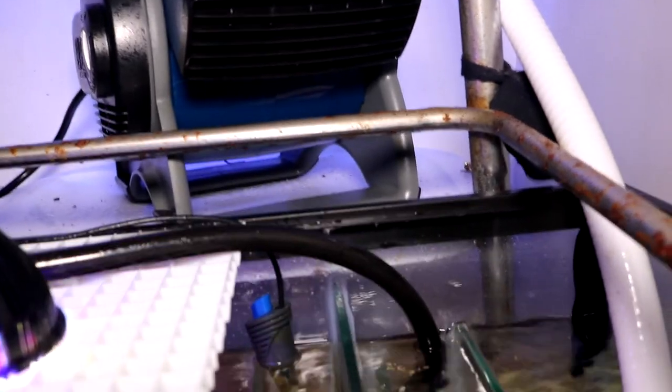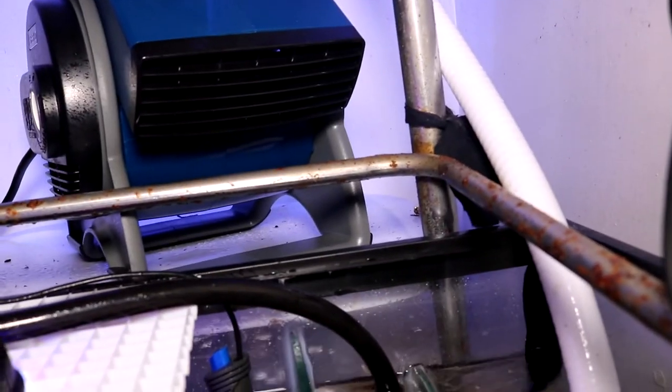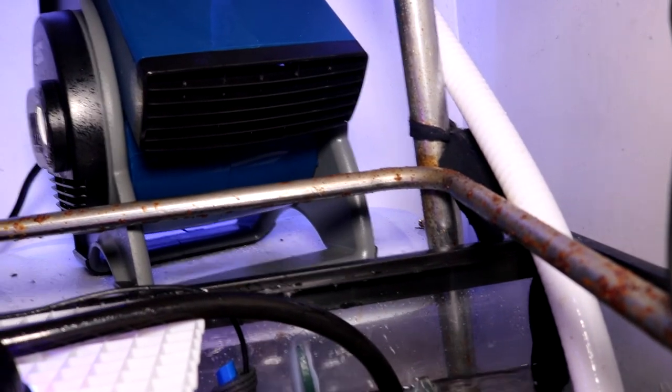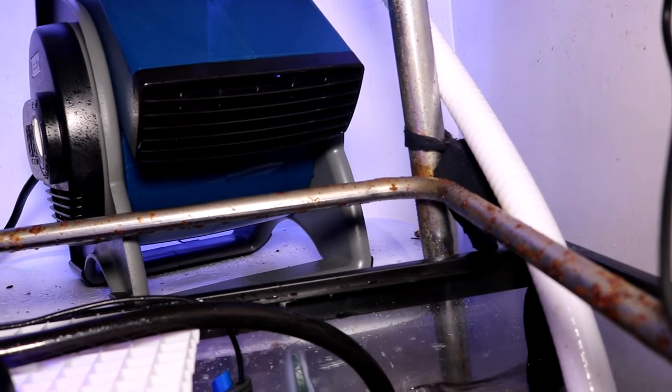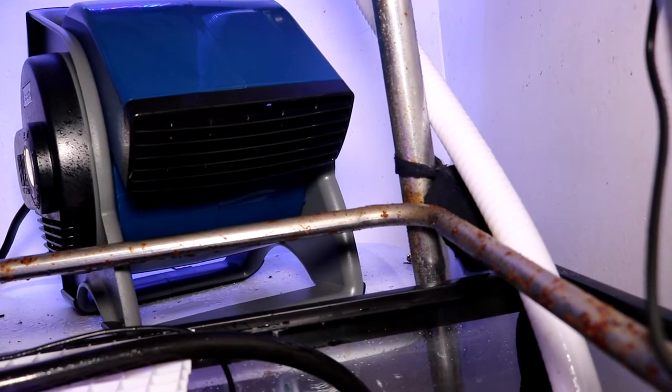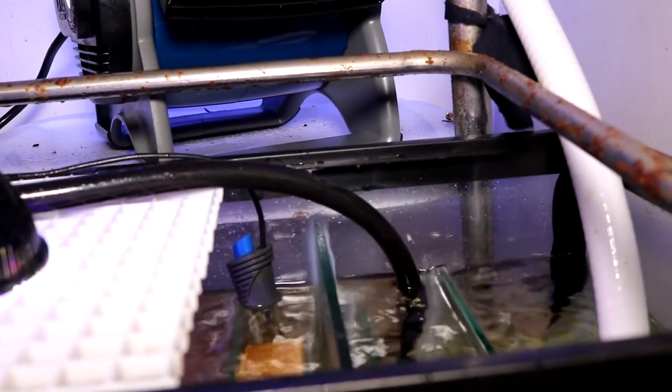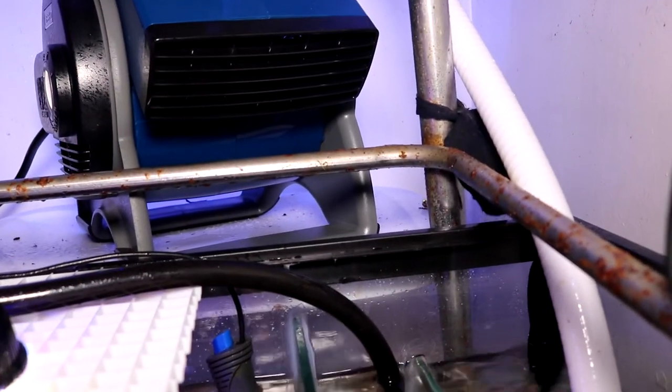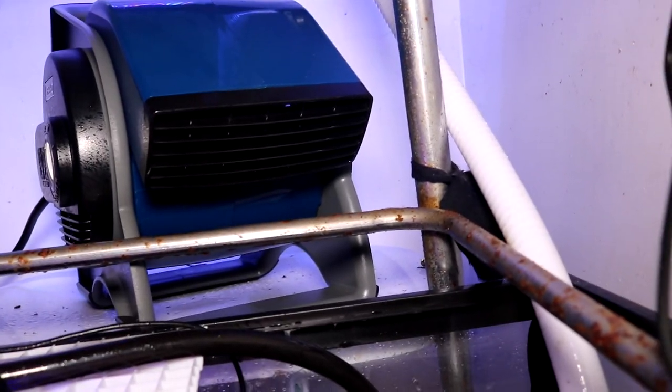Back to the topic about aquarium chillers. I could easily get a chiller, but it will cost me anywhere between four to five hundred dollars to get a chiller. After setting up this tank, I don't have that kind of budget right now, nor do I have the real estate to be honest.